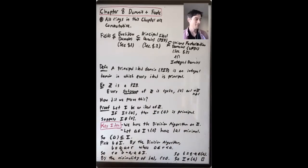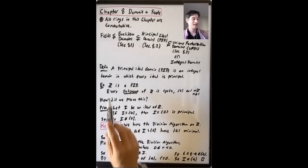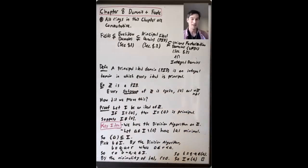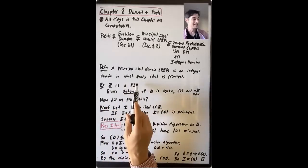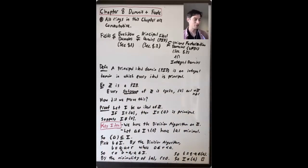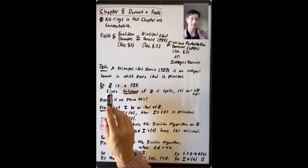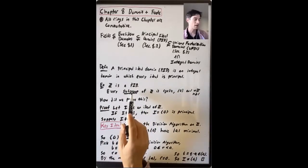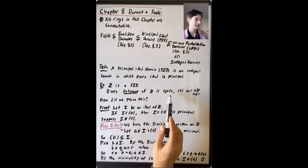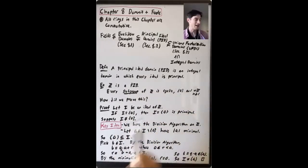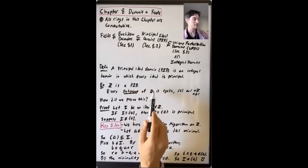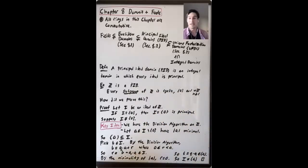Why is Z a PID? Because every ideal is an additive subgroup that behaves in a certain way with respect to multiplication. Z is a PID because an even stronger thing is true: not only is every ideal in Z principal, but every additive subgroup of Z is cyclic. The subgroups are the trivial subgroup and nZ for all n at least one. Since every subgroup is already cyclic and every ideal is certainly an additive subgroup, that already shows that Z is a PID.